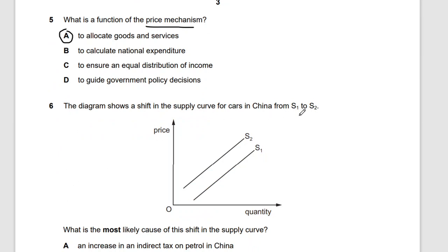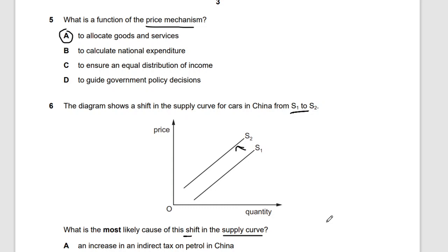Question six: the diagram shows a shift in the supply curve for cars in China from S1 to S2 — that's a shift to the left. What is most likely to cause this? A shift to the left means less quantity is being supplied. An increase in the wages of Chinese car workers is the answer — that's C. When wages increase, production costs rise, reducing supply.